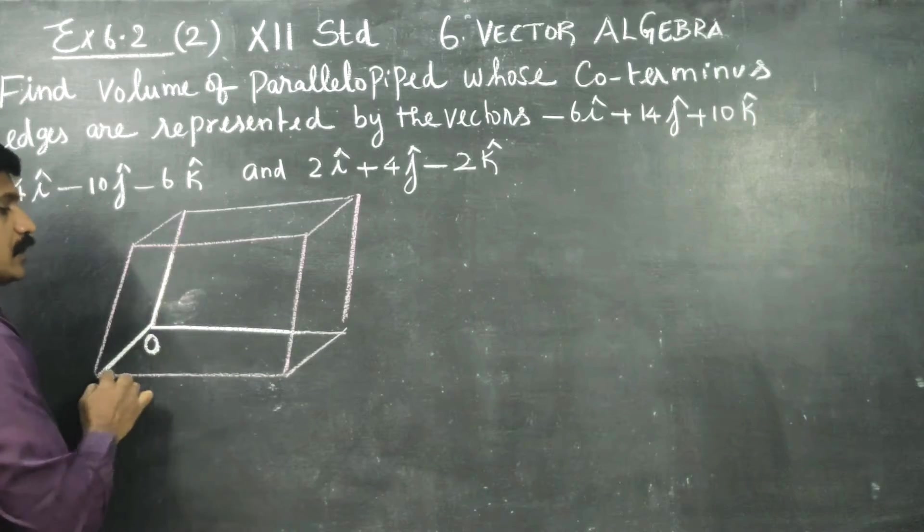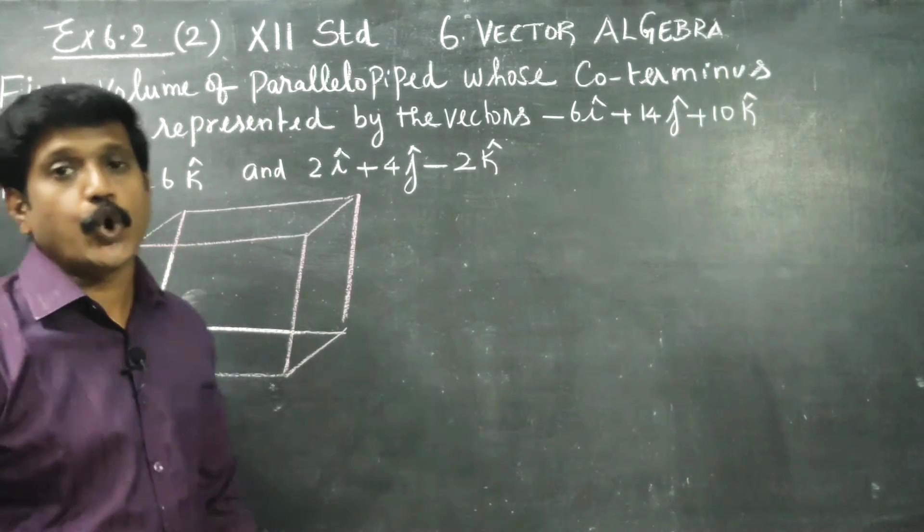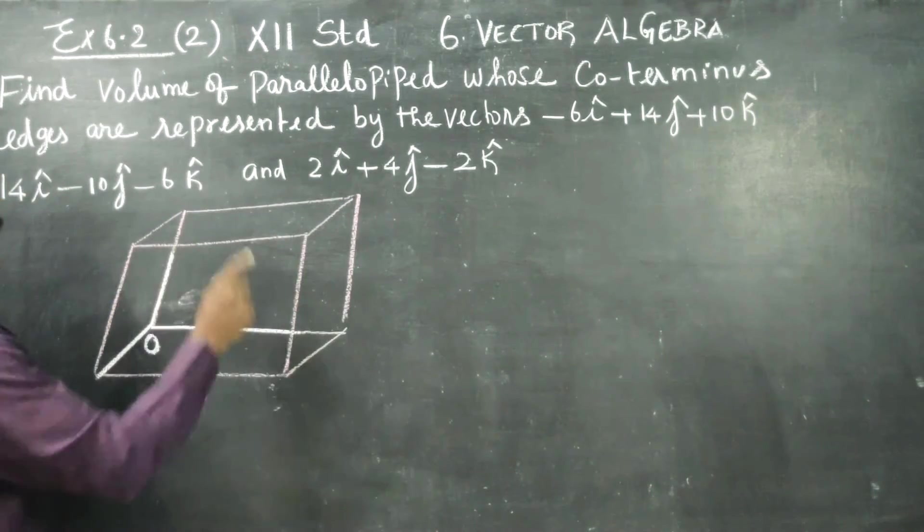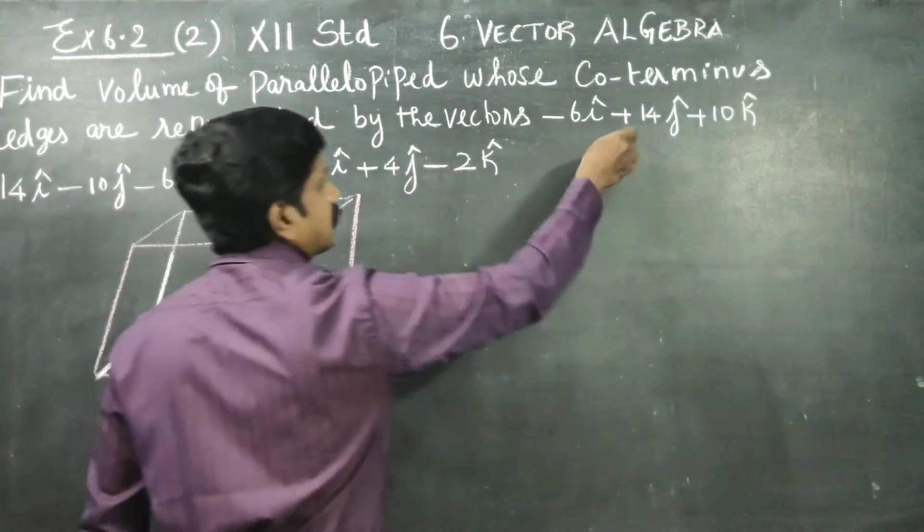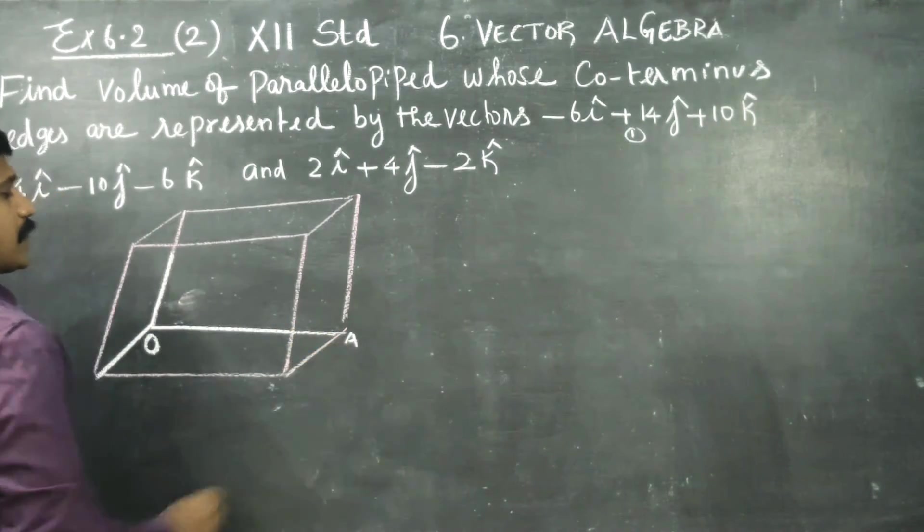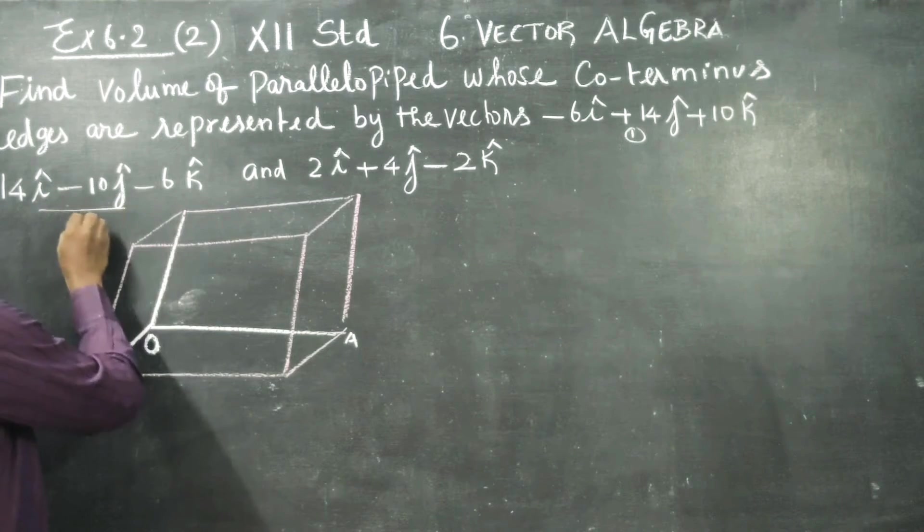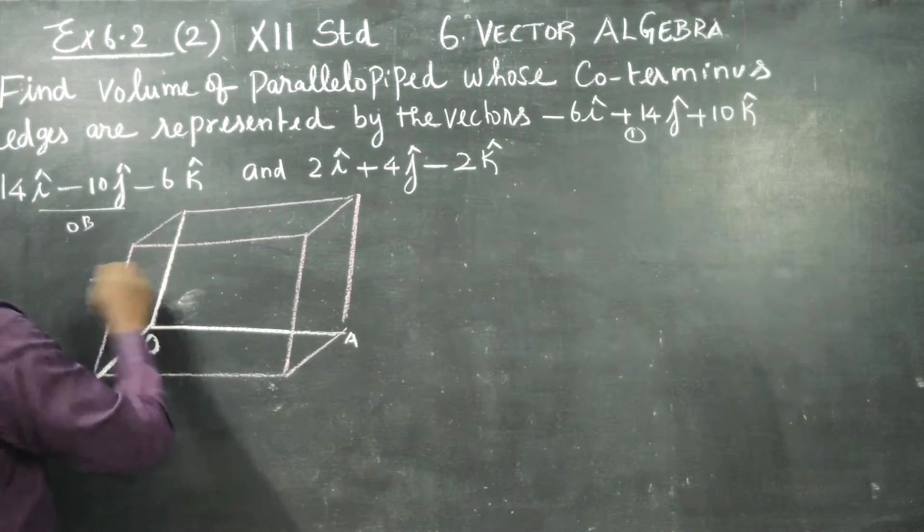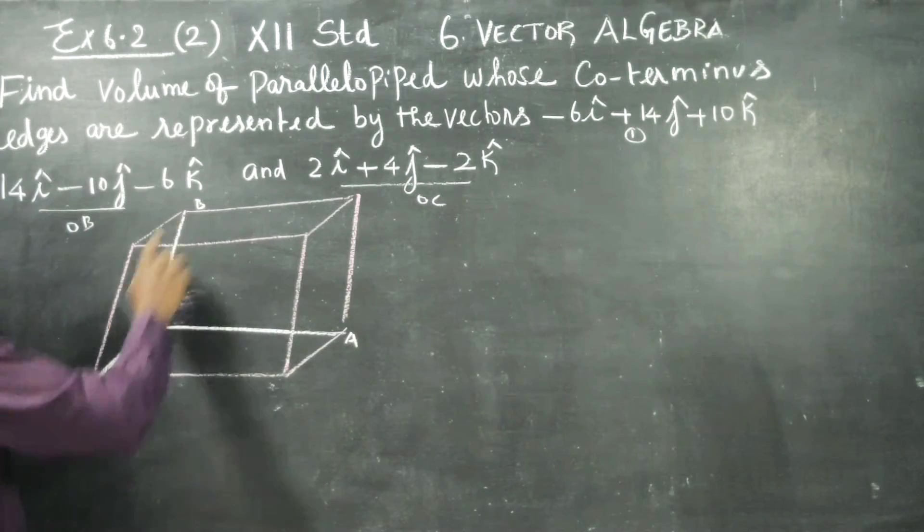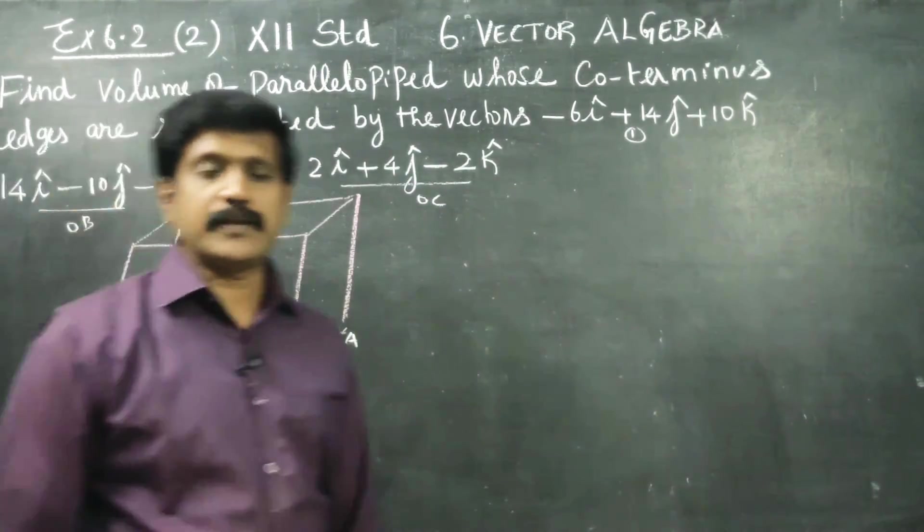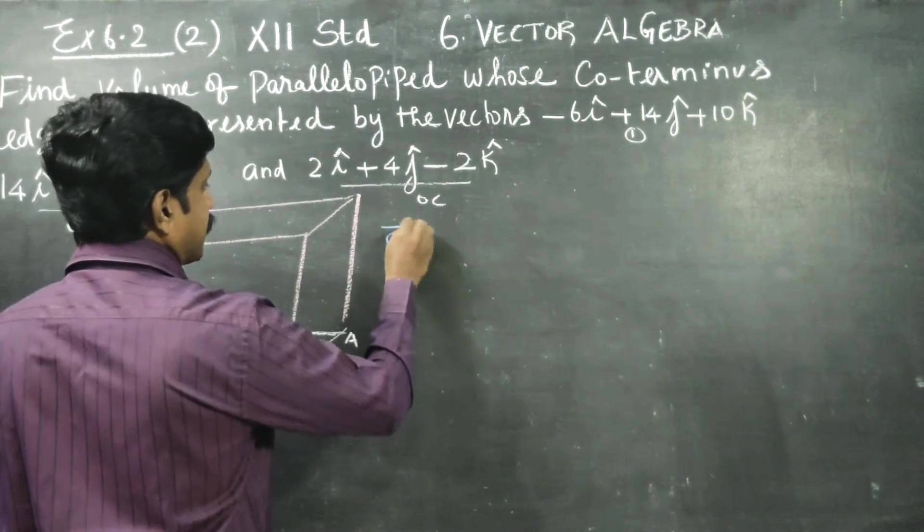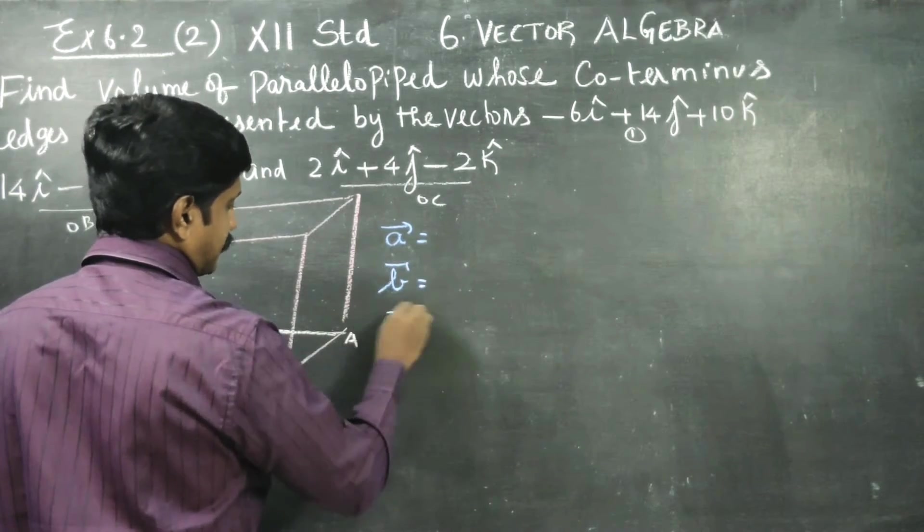These three lines are called coterminous edges. The corner vectors of this parallelepiped - the first vector is one corner, this one, let it be OA. Another corner is OB, and third corner will be OC. These become coterminous edges. I am going to name these coterminous edges as a vector, b vector, and c vector.